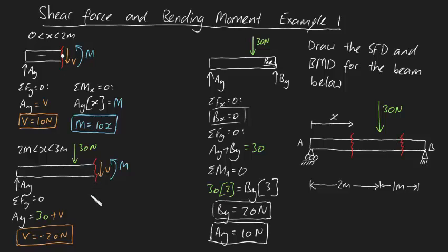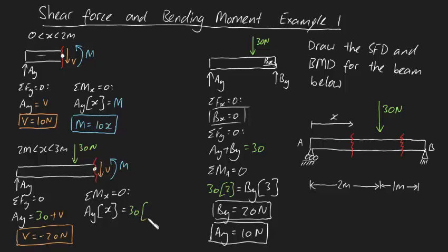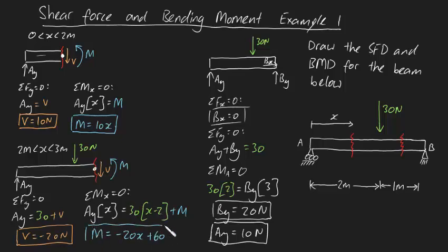Notice the shear force plummets right after the 30 Newton force — that's really interesting. Now taking the sum of moments about the cut point X: AY produces a moment of AY times X, and the 30 Newton force produces a moment of 30 times (X minus 2 meters). Adding the bending moment M and rearranging, M equals minus 20X plus 60. This is our bending moment equation for the domain 2 < X < 3 meters.